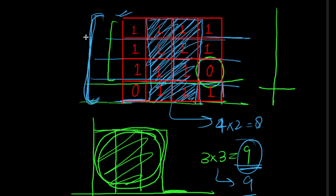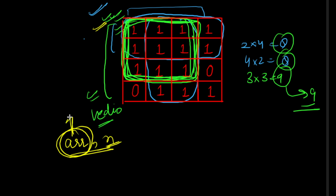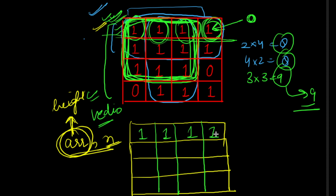Now we'll see how to modify the matrix so it works with the Maximum Area of Histogram function. We pass each row to that function, which takes an array and its size. The array holds the heights of bars in the histogram. We'll convert the input matrix into such a height array for each row.